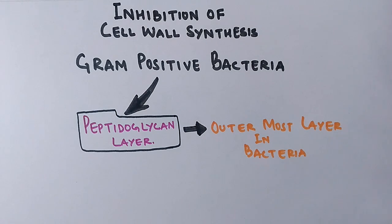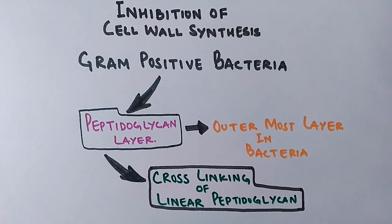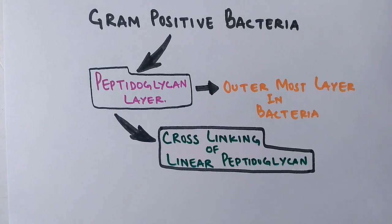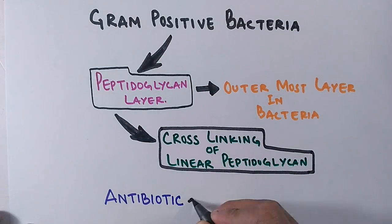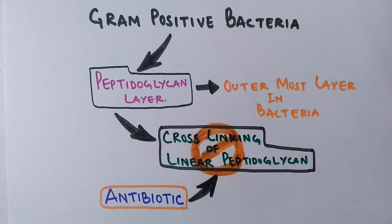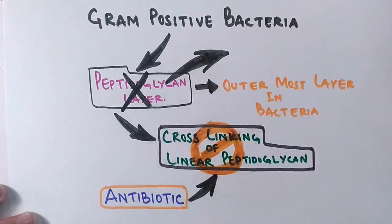In its making, there is a cross-linking of linear peptidoglycan chains, and when there is a cross-linking of linear peptidoglycan chains, the peptidoglycan layer is made finally. And here in this process, the antibiotics inhibit the cross-linking of linear polypeptide chains, thereby the peptidoglycan layer is not made. When the peptidoglycan layer is not made, cell death occurs.